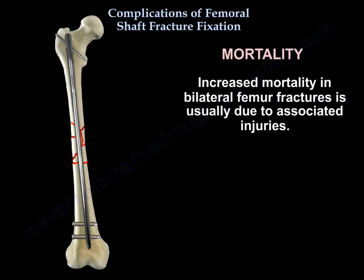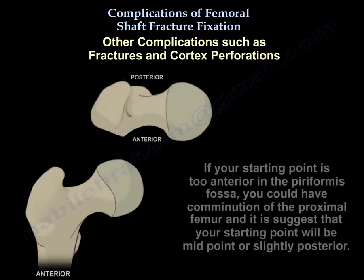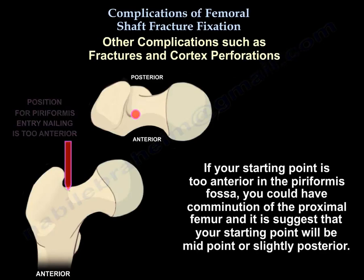Increased mortality in bilateral femur fractures is usually due to associated injuries. Other complications include fractures and perforations. If your starting point is too anterior in the piriformis fossa, you could have comminution of the proximal femur.